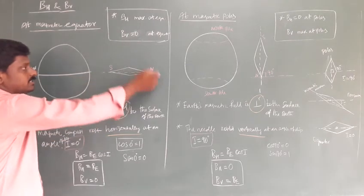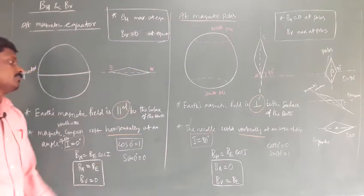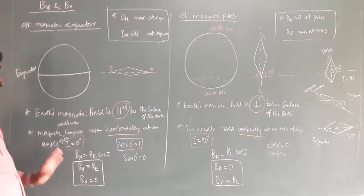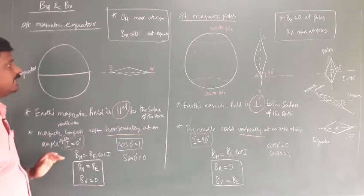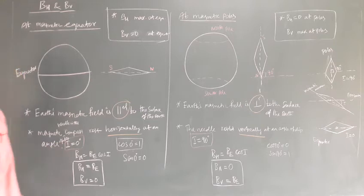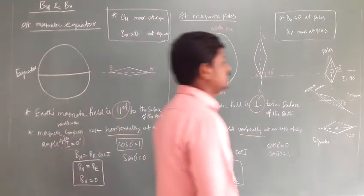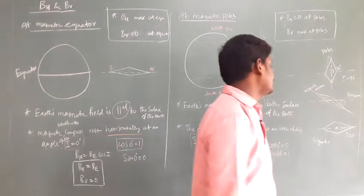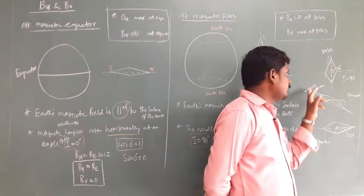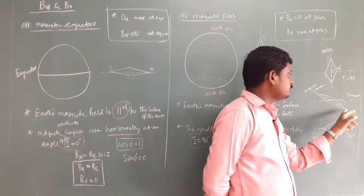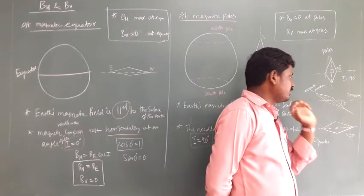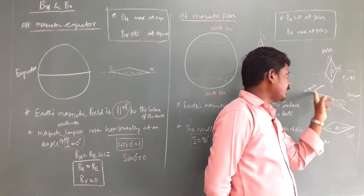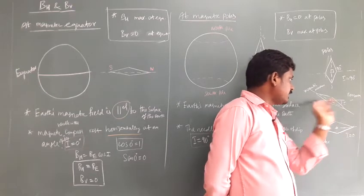Earth's magnetic field is parallel to the surface of the earth, so the magnetic field will rest horizontally at an angle of I equal to 0. The angle of inclination I is the angle between the magnetic meridian and the horizontal direction. In the previous class, we discussed this concept.